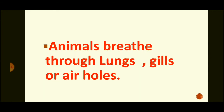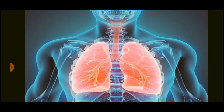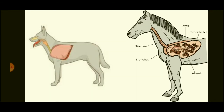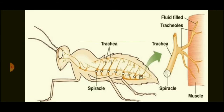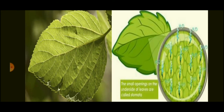The next point: animals breathe through lungs, gills, or air holes. Some animals like cows, horses, and even human beings breathe through their lungs. Fish breathe through their gills. Some insects like cockroaches, flies, and butterflies have air holes on their bodies which help them to breathe. So different animals have different parts that help them breathe.